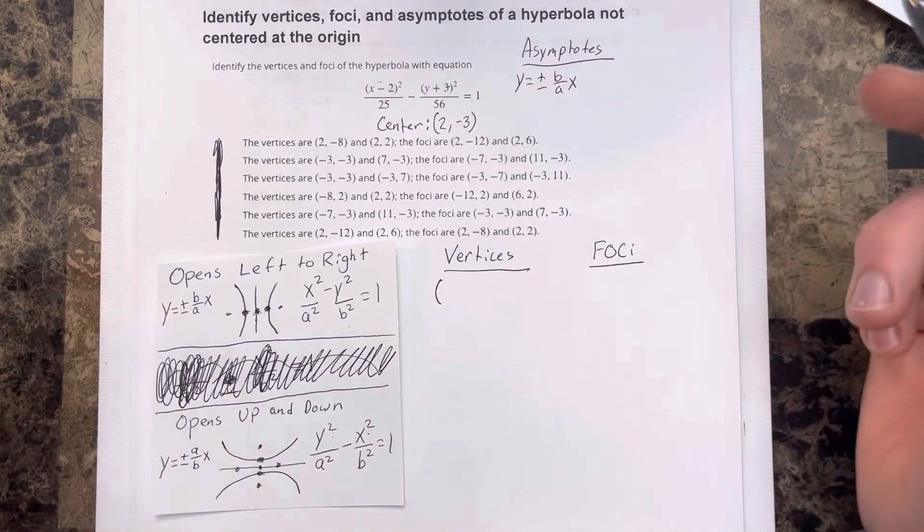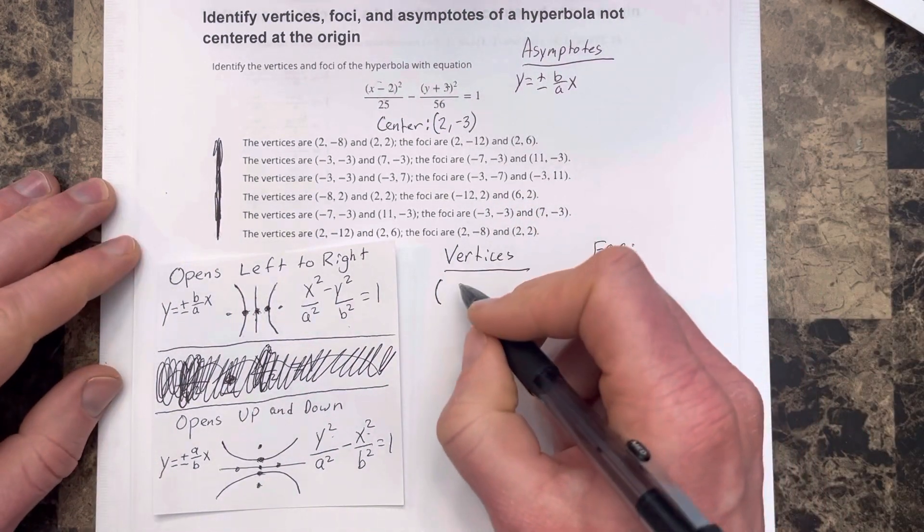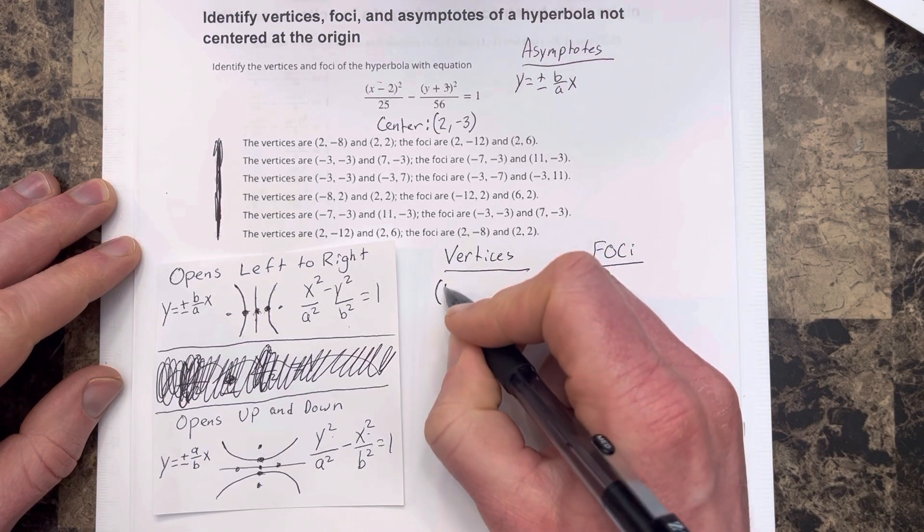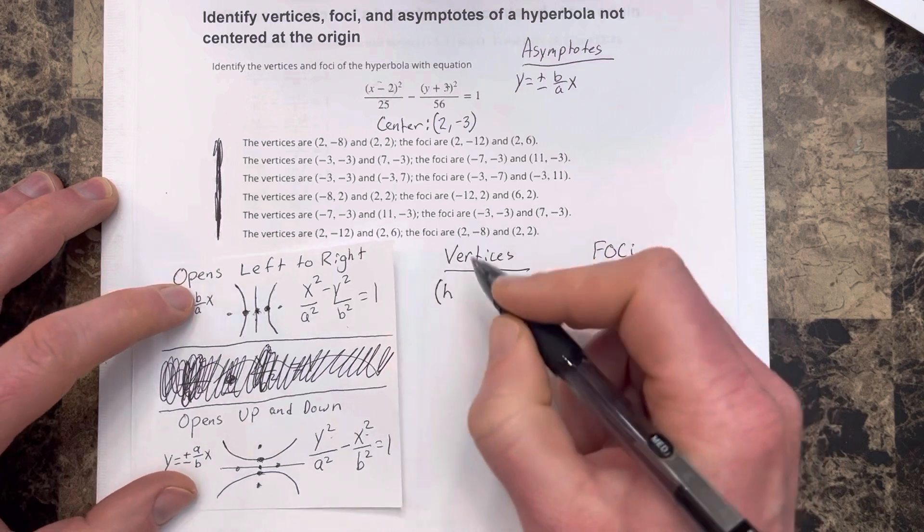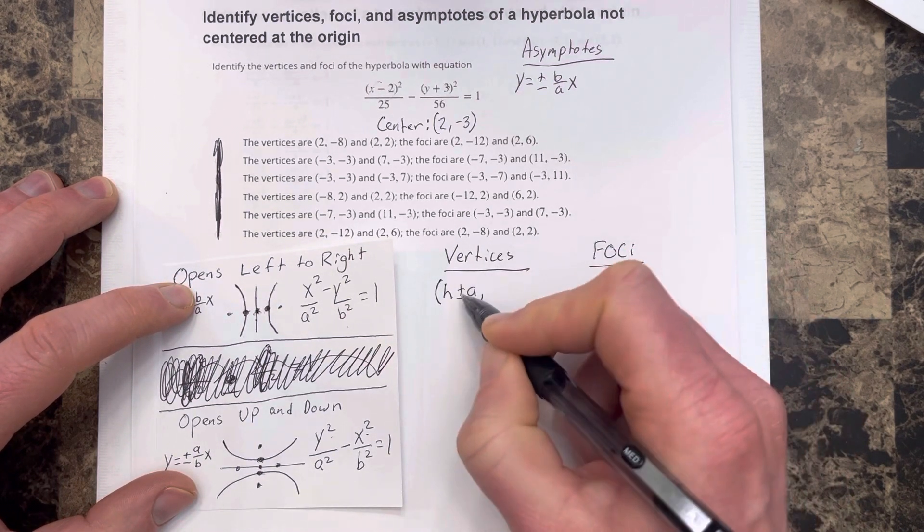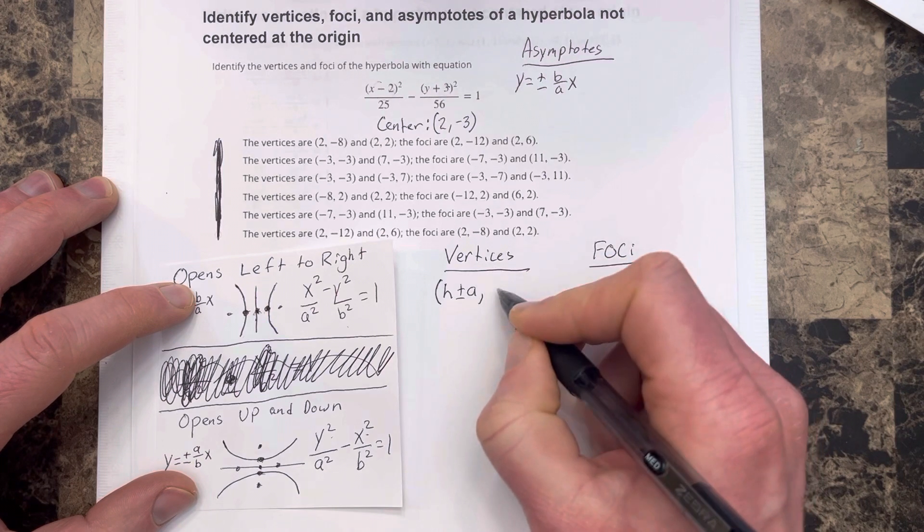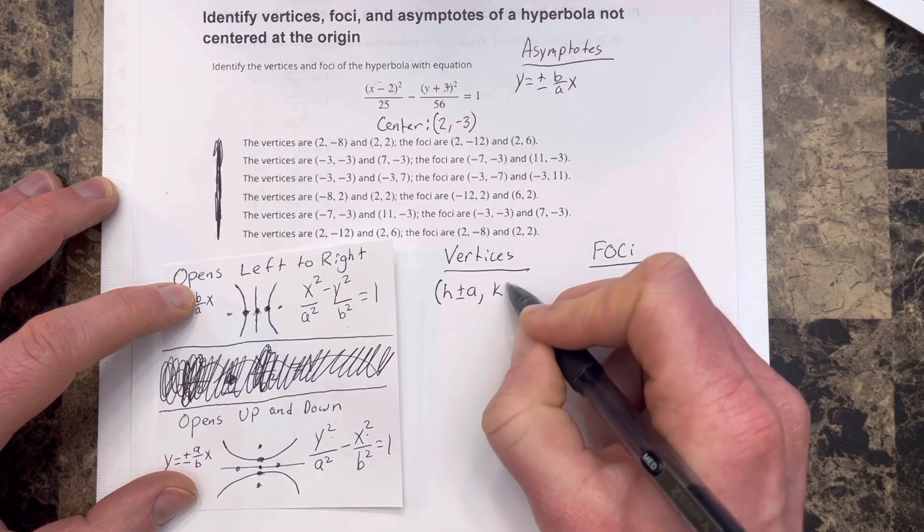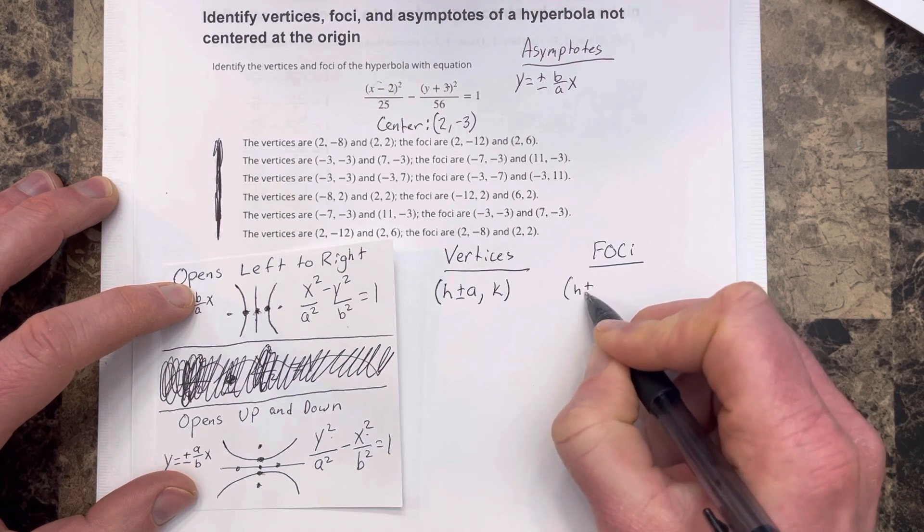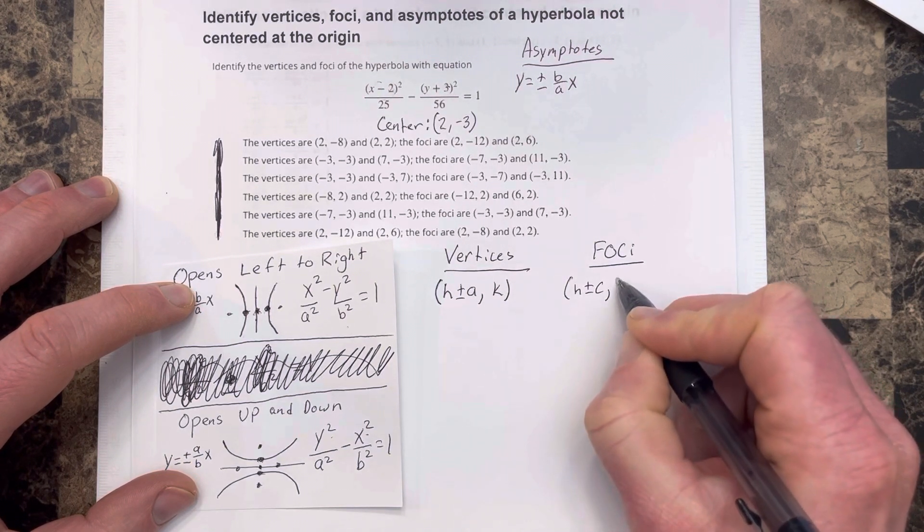So we have the center at 2, negative 3, so our vertices are going to be h plus minus a, comma k, because we're going to add a and subtract a. And our foci are going to be h plus minus c, comma k.